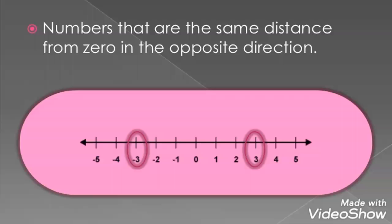What is an opposite number? Numbers that are the same distance from 0 in the opposite direction.